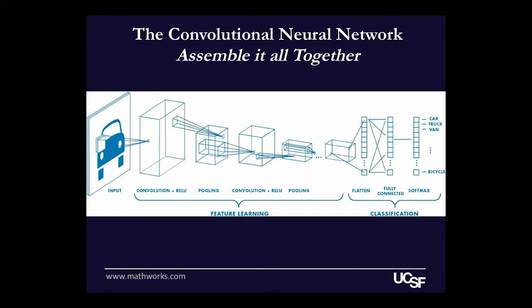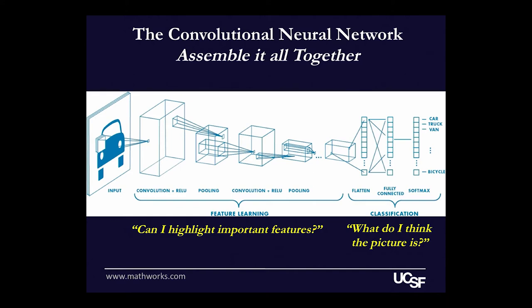Going back to our diagram of this convolutional neural network: as we train, we're typically processing images from left to right. The first part containing these convolutional filters is the 'can I highlight important features' part. After a number of these layers, it generates output that's passed to the multi-node neural network — the 'what do I think this picture is' part. The big difference between these algorithms and other image processing algorithms is that we are not telling the algorithm to look for edges or colors. The computer is figuring out what it should look for on its own.